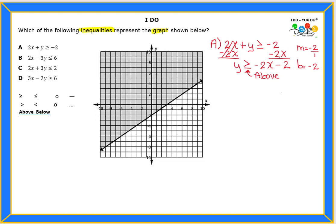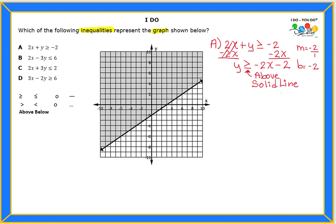Now I'm going to use a reference table to help us understand what to do. Looking at the table: the symbol greater than or equal to corresponds to a solid line, and shading above the line. So I'm looking for a solid line — which I do see on the graph — and shading above. That's how we use the table throughout the problem.